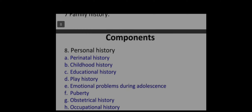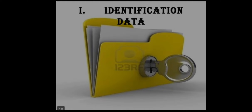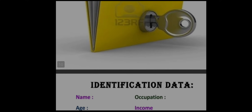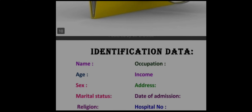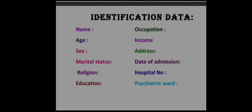Let's explain each one. The first component is identification data. In identification data we record the patient's name, age, sex, marital status, religion, education, occupation, income, address, date of admission, hospital, bed number, and psychiatric report. So identification data is the first component of psychiatric history.